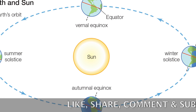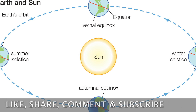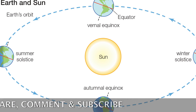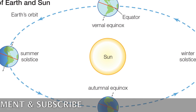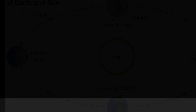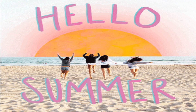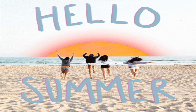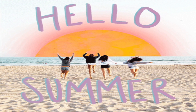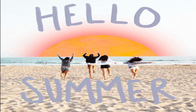Does the solstice always occur on the same day? The timing of the June solstice is not based on a specific calendar date or time — it all depends on when the sun reaches its northernmost point from the celestial equator. Therefore, the solstice won't always occur on the same day; currently it shifts between June 20, 21, and 22.